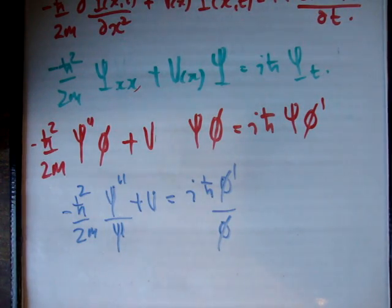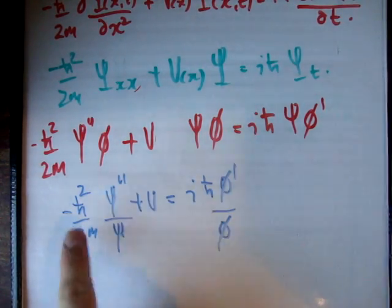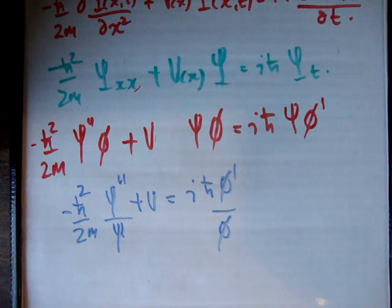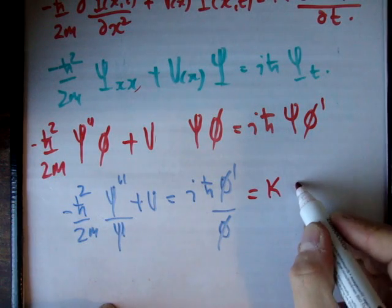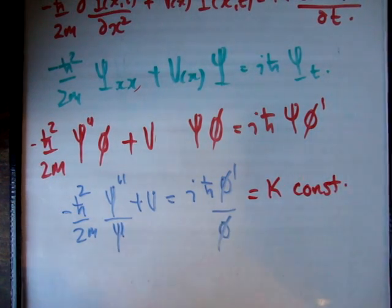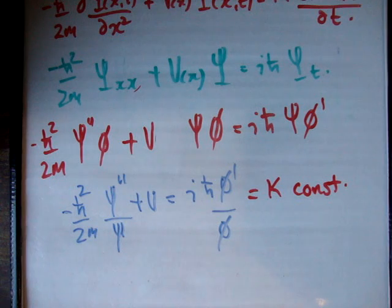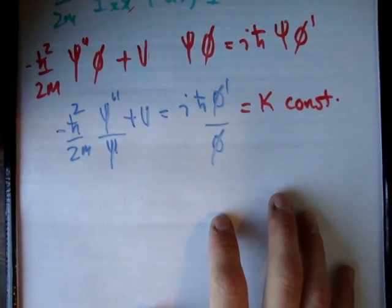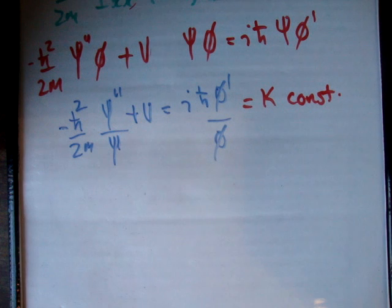Now, if you think about this, you have two functions which are both varying — this side varies, and so does this side. The only way these can be equal for all time is if they're actually equal to a constant, which I'm going to call k. If you don't believe that, just think about it. This makes life a lot easier because we can now separate this out even further.